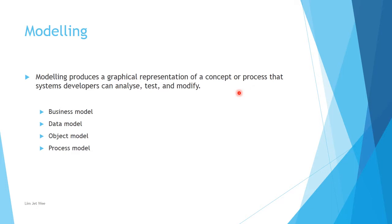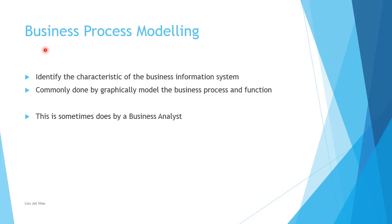There are quite a number of models that can be built, such as what we have listed here — from your standard business model to data objects for object-oriented development or even the process. Looking at business process modeling, the title tells you what it is: you want to identify the characteristics of the business information system — how they perform their transactions, for instance in a retail environment, or how they do their pricing.